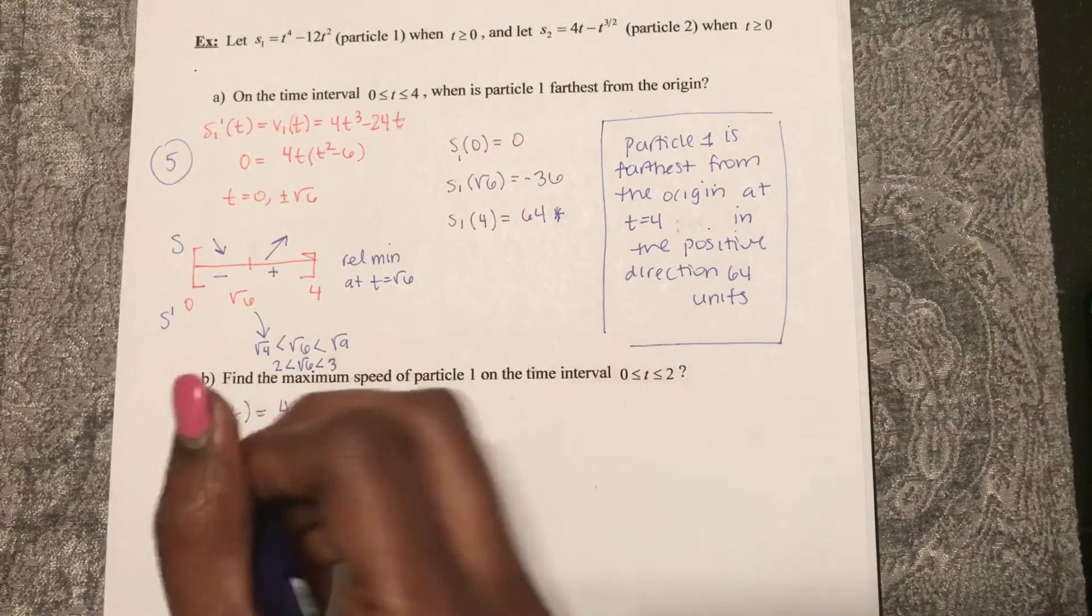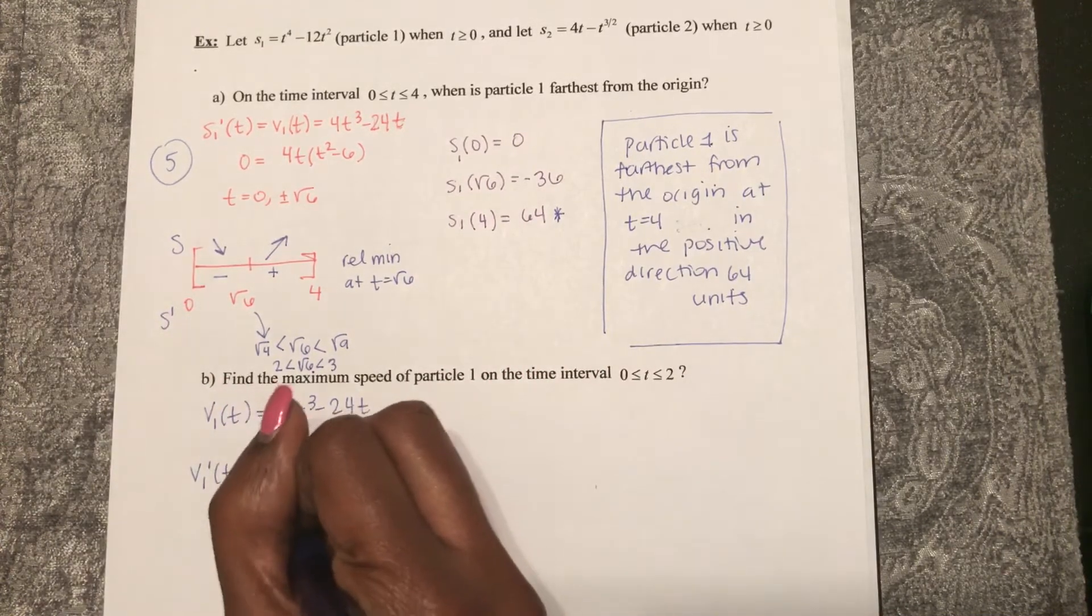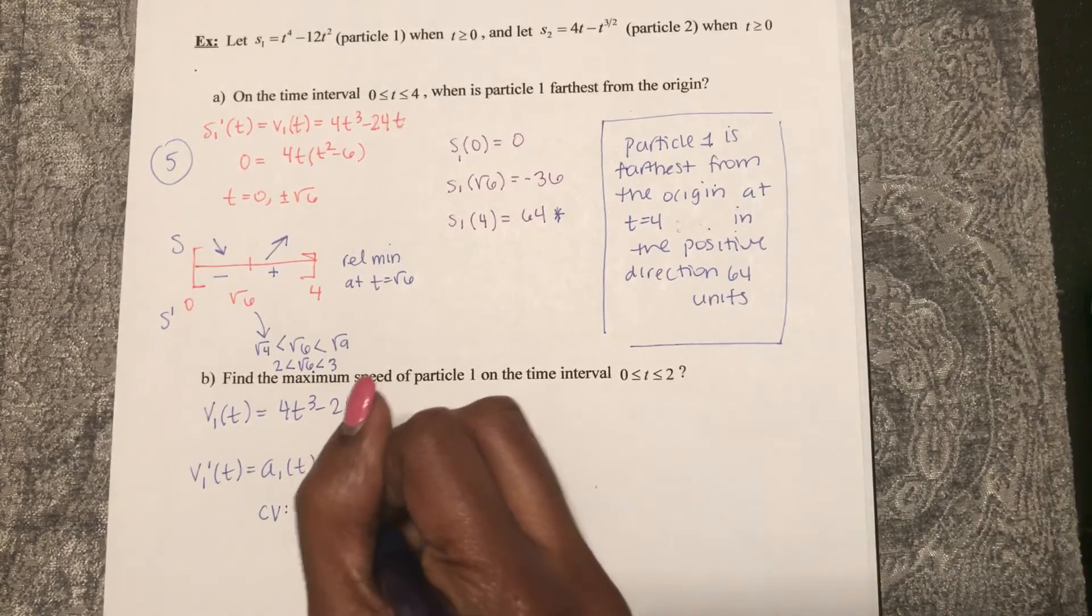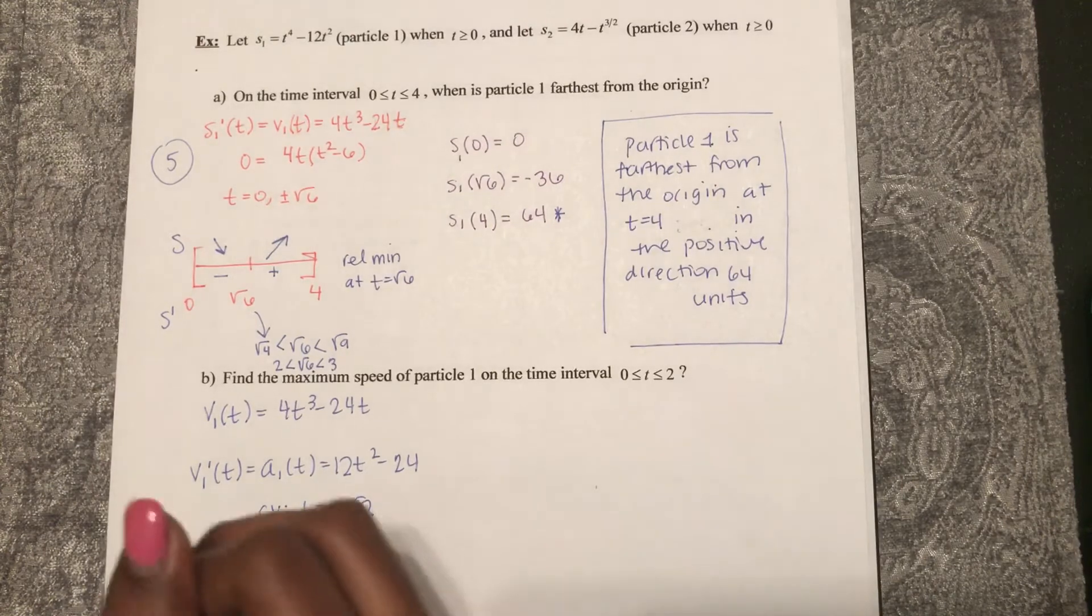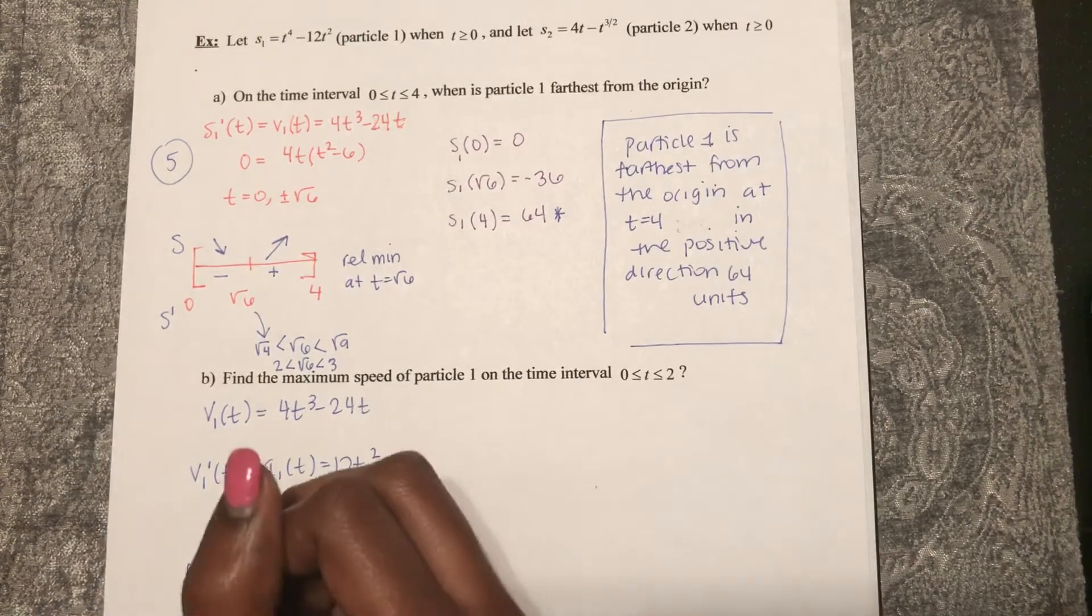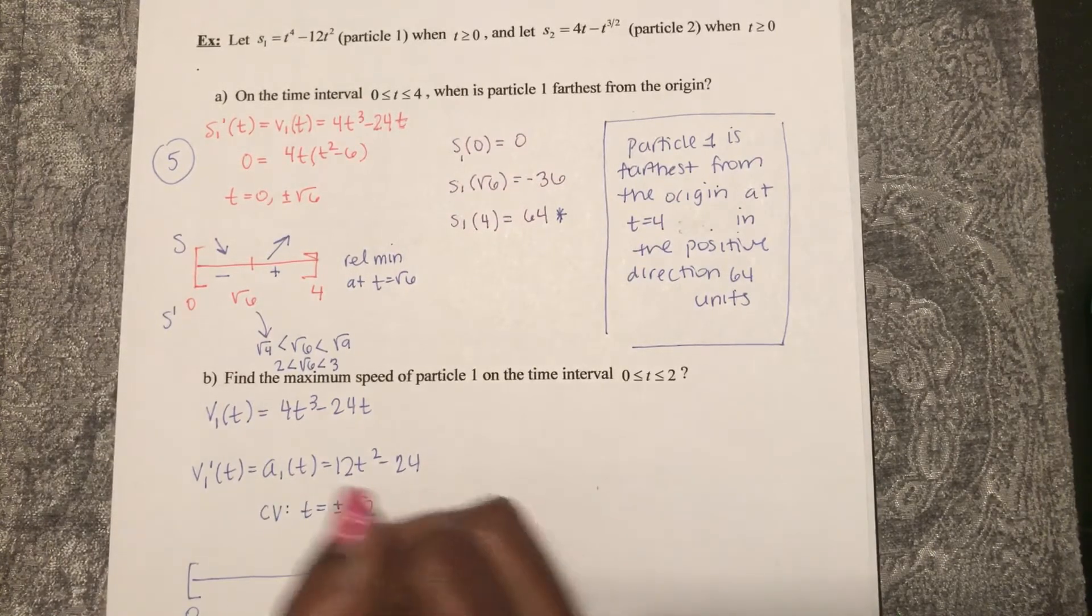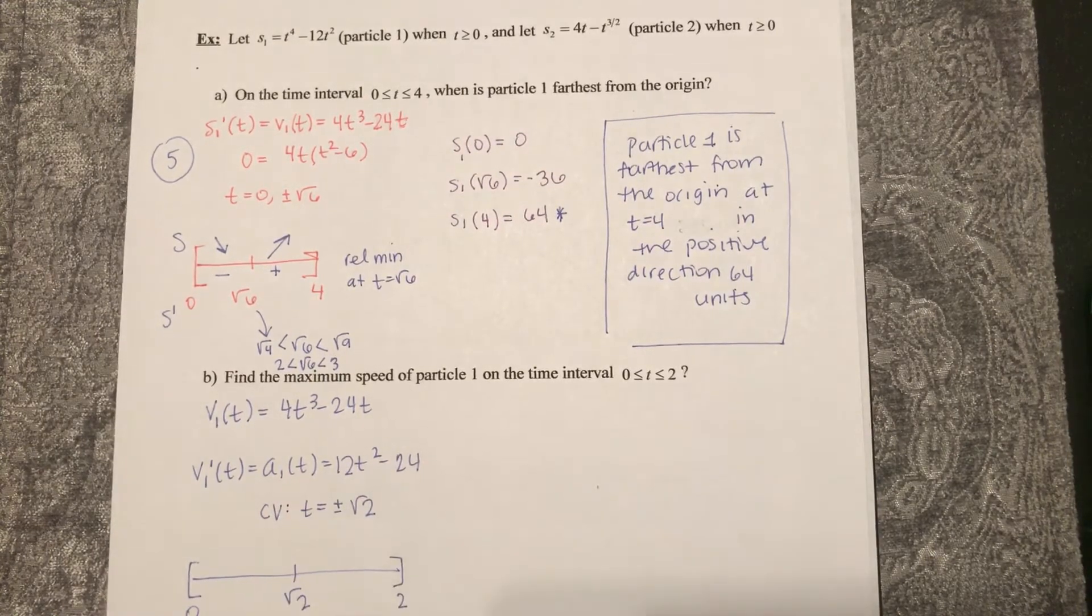So if I find that critical value, t equals plus or minus square root two. Let me do a sign check from zero to two. Only square root two falls in that interval.